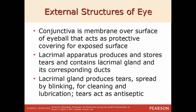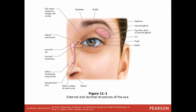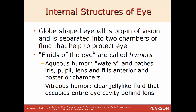The lacrimal gland produces tears and spreads them by blinking for cleaning, lubrication, and as an antiseptic. Here is a generic illustration of the external and lacrimal structures of the eye, showing the lacrimal sac, the eyeball itself, the sclera (the white part), the eyelid, the eyelashes, the iris (the colored part), and the pupil where light enters the eye.